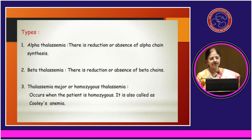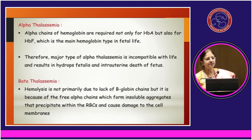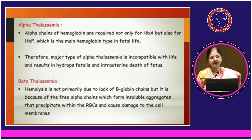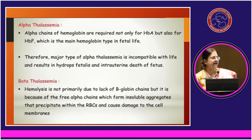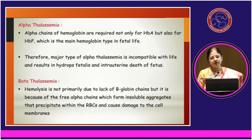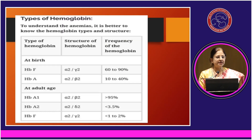Thalassemia major, or homozygous thalassemia, is also called Cooley's anemia. In alpha thalassemia, the alpha chains are absent. Since fetal hemoglobin HbF also contains alpha chains, the child is not able to thrive in utero and most of the time results in an IUD or hydrops fetalis — incompatible with life. In beta thalassemia, it is primarily due to lack of beta globin chains, but the free alpha chains form insoluble aggregates that precipitate within the RBCs and cause damage to the cell membranes.